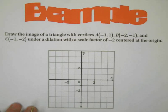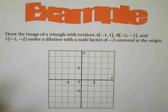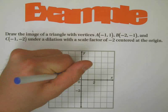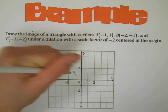For example, draw the image of a triangle, so that means image not pre-image. That means draw the dilated image. We need to start here with the original vertices. The original vertices are negative one, one, so here's point A.